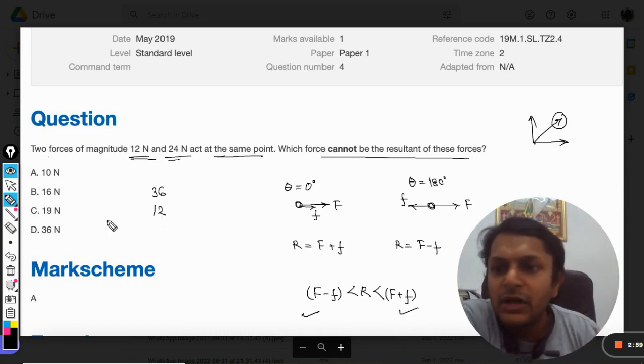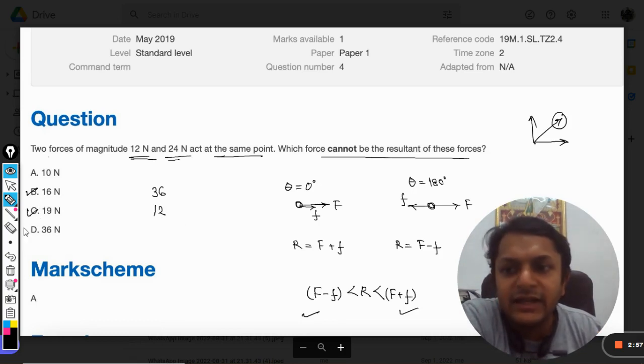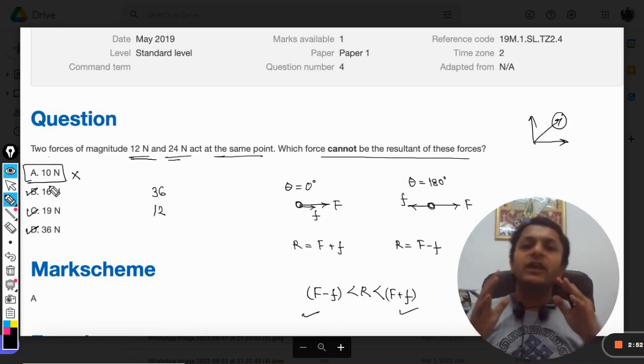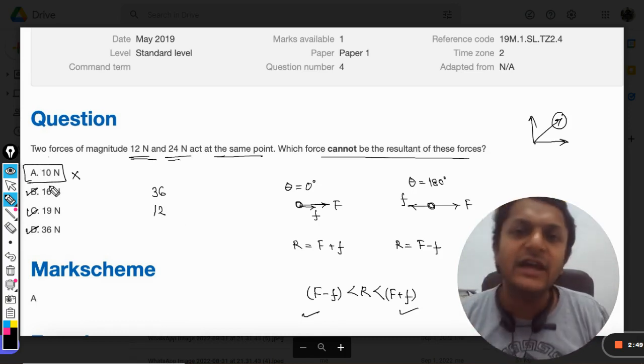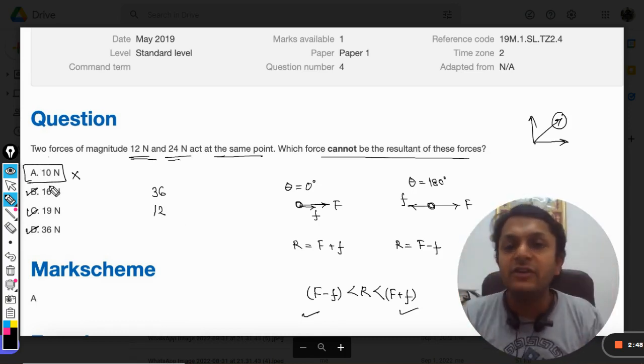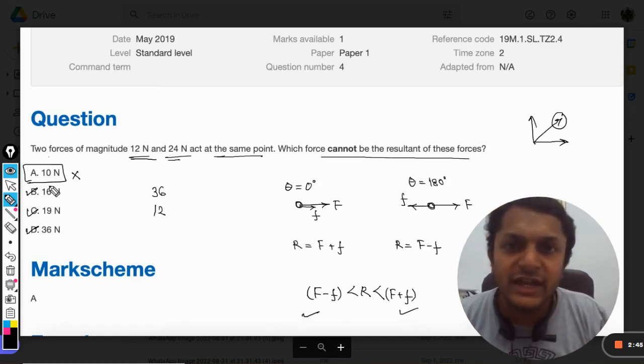So 16 can be, 19 can be, 36 can be, but 10 newton cannot be. So our answer will be A, that the resultant can never be 10 because it can never be lesser than 12 newton.